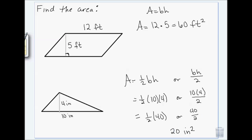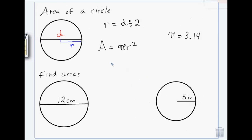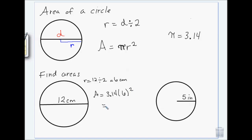To find the area of a circle, we're given the diameter, so the first thing we do is find the radius. The radius is six. Then area equals pi times the radius squared, so that's 3.14 times 36.